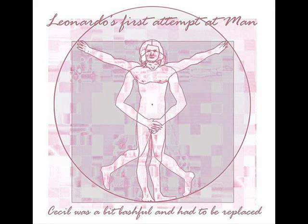Most people are familiar with Leonardo's drawing of a man showing the proportions of the body with a circle and a square. This is Cecil, who was a bit bashful and had to be replaced.